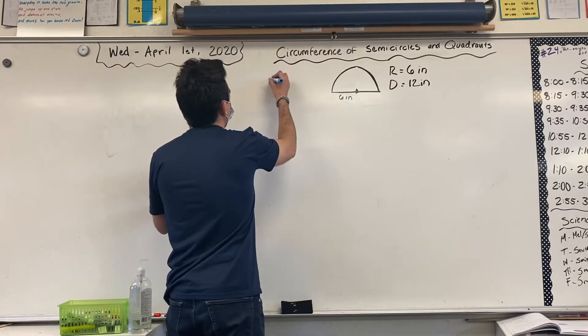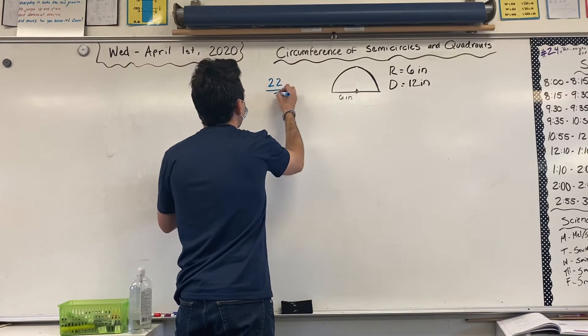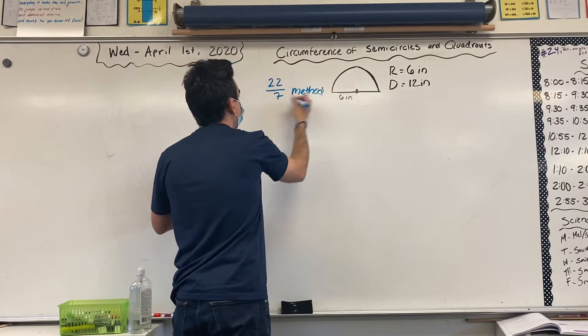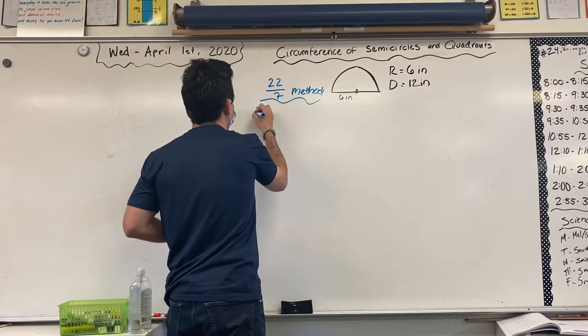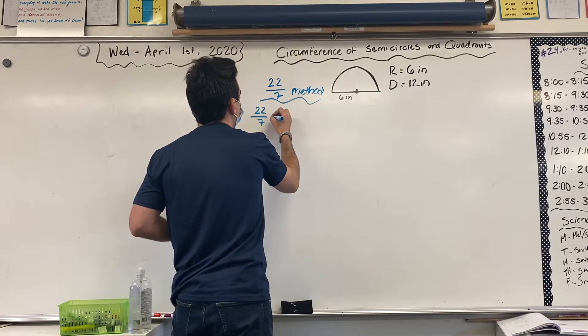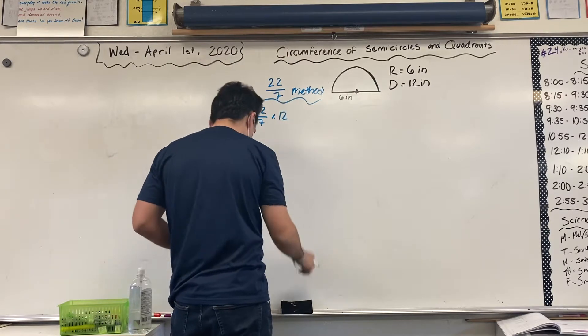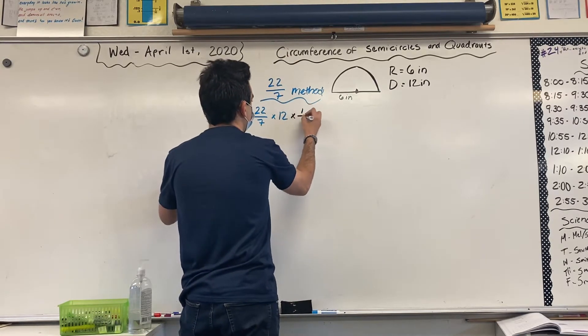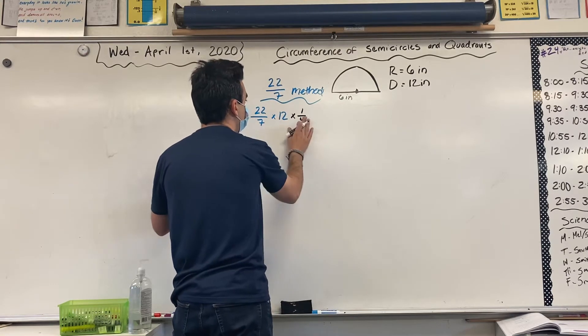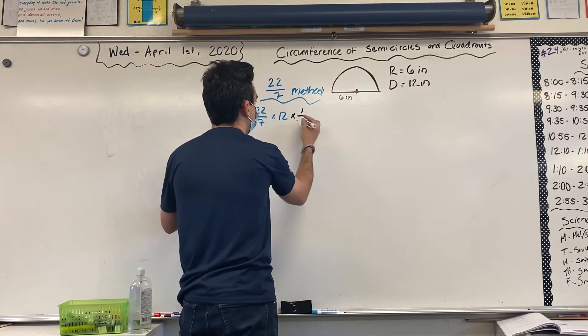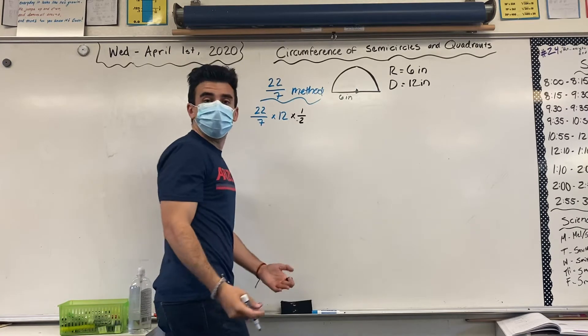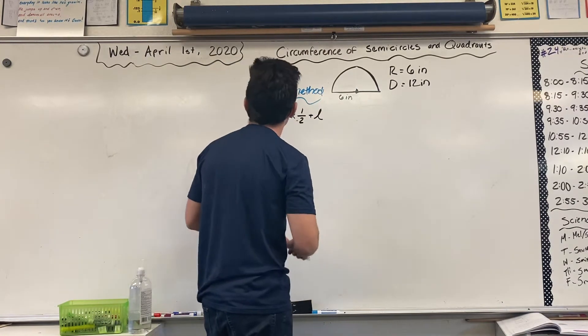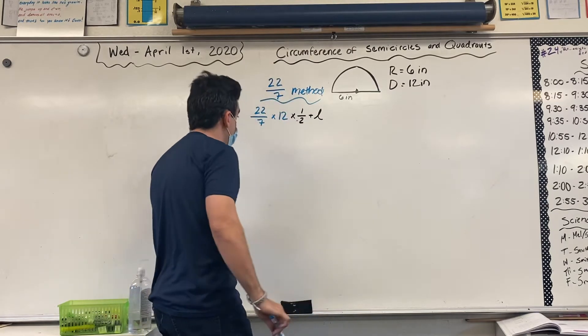So, I have 12 inches as my diameter. Now, let's do 22 over 7 method. And it's going to start the same way. 22 times 12, which is our diameter. Then, we're going to multiply by 1 half, because the semicircle is 1 half of a circle. And then, don't forget, we have to add the length. So, let's go ahead and let's start.